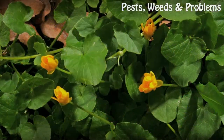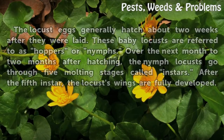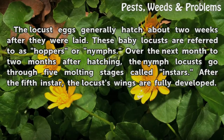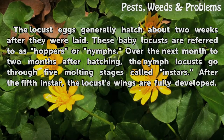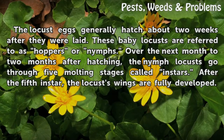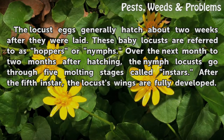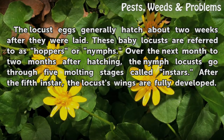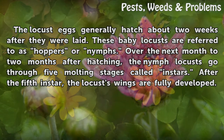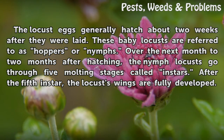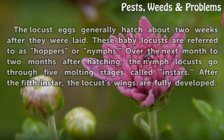Nymphs. The locust eggs generally hatch about two weeks after they were laid. These baby locusts are referred to as hoppers or nymphs. Over the next month to two months after hatching, the nymph locusts go through five molting stages called instars. After the fifth instar, the locust wings are fully developed.